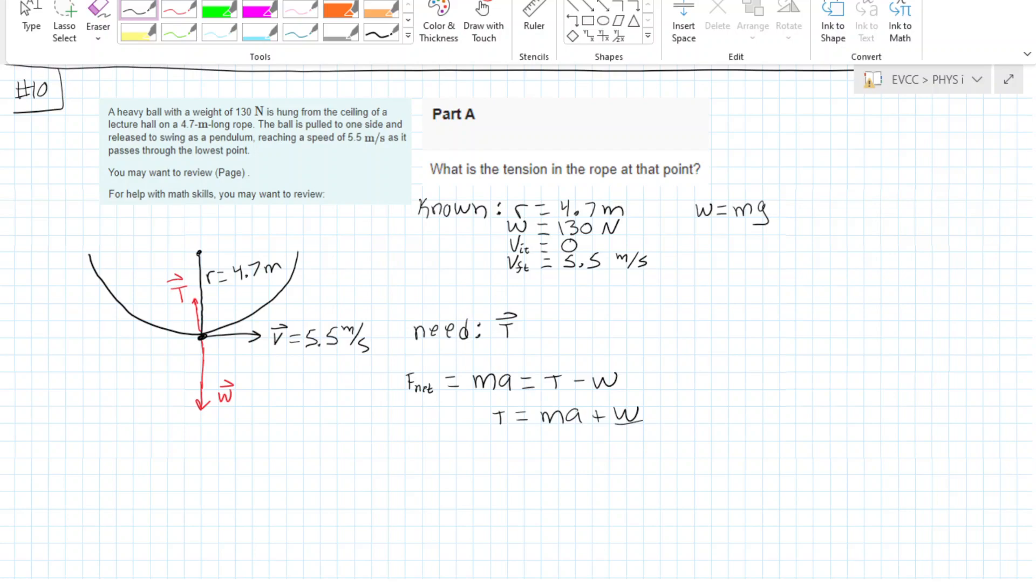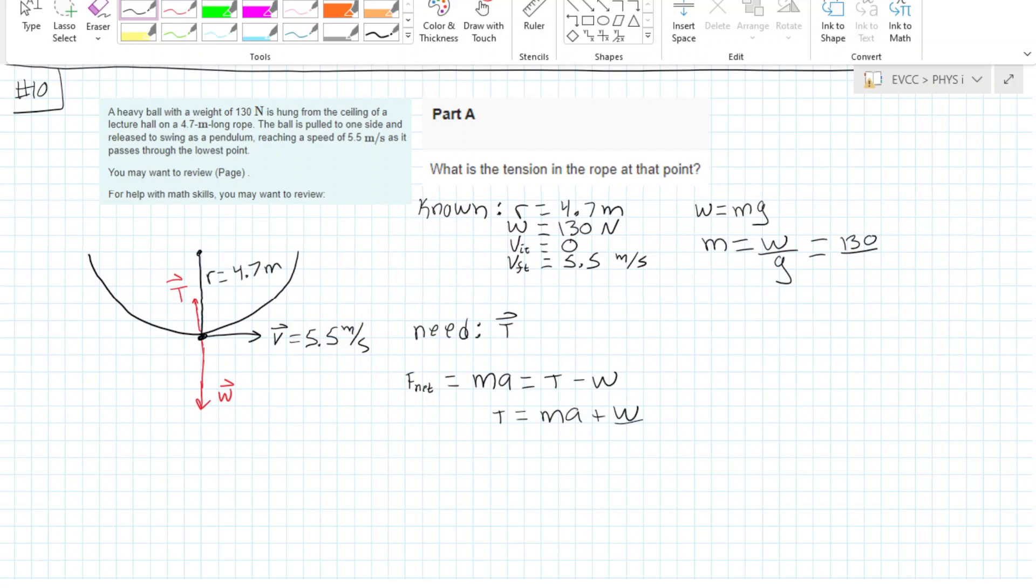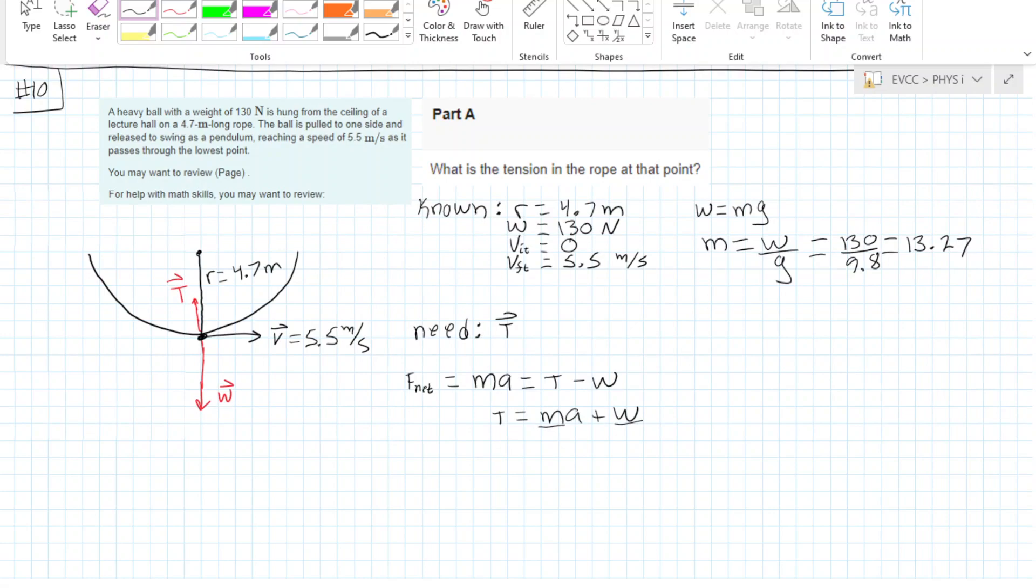We're given gravity so we can solve where mass equals weight divided by gravity, which is 130 divided by the acceleration due to gravity, which is 13.27. So now we have our mass and our acceleration is normally going to be tangential and radial.